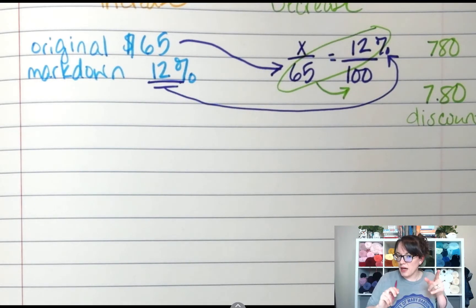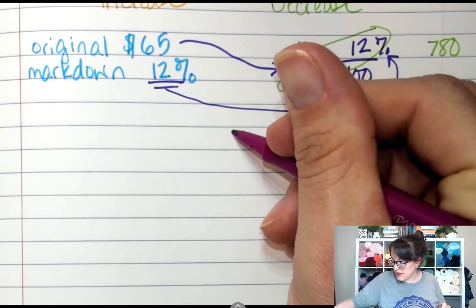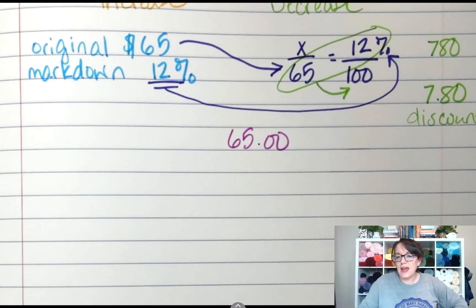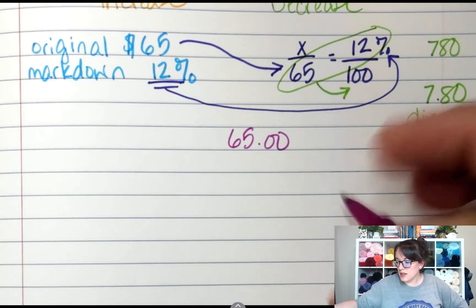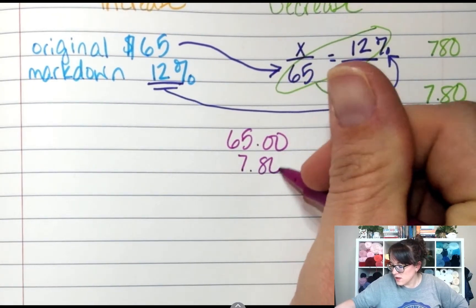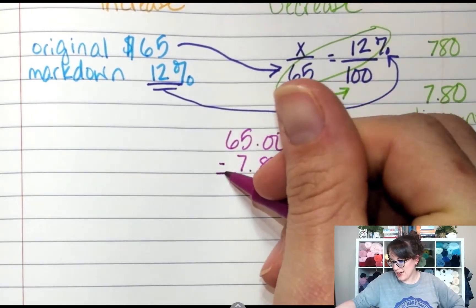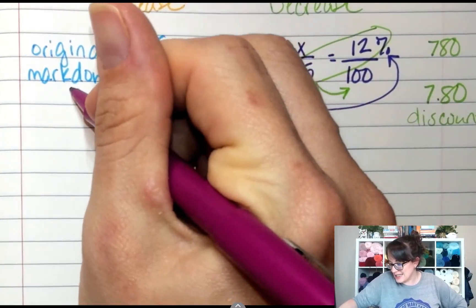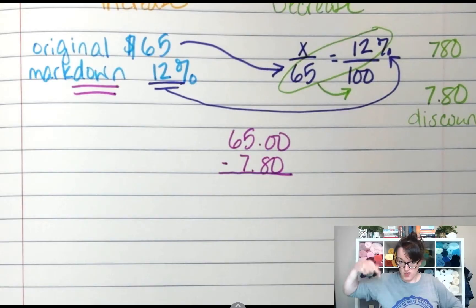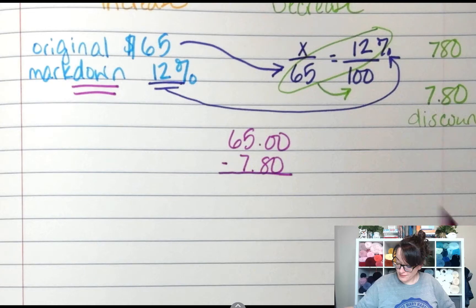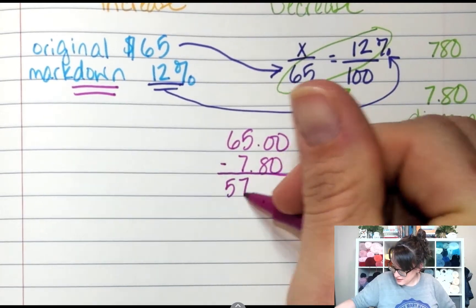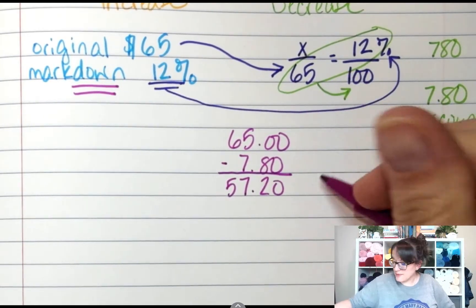So what was my original price again? $65. So I'm going to write $65.00. And how much am I going to decrease the price? $7.80, which is 12%. So I subtract because it said markdown. So I'm going to subtract these two. And what do you get? $57.20.